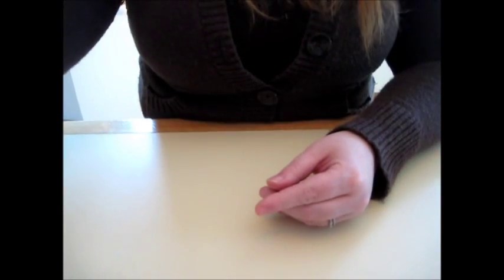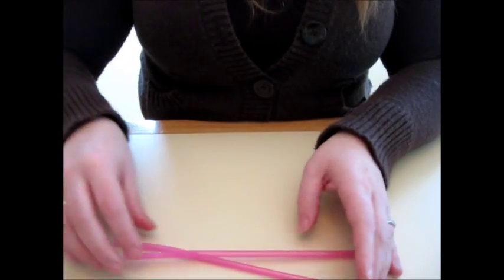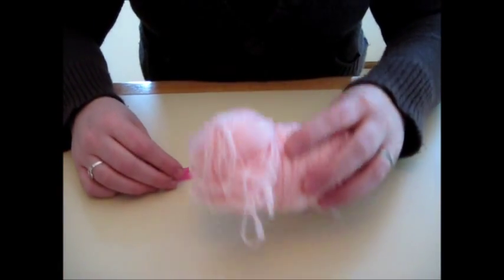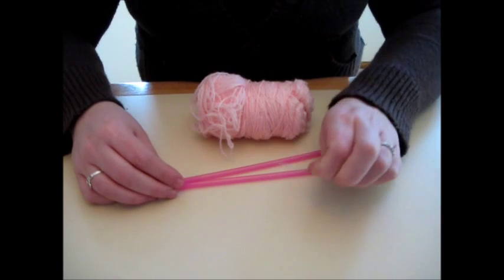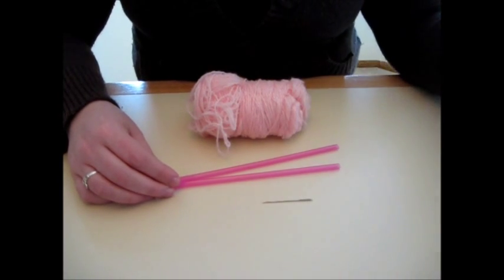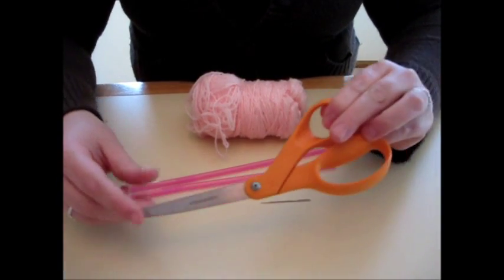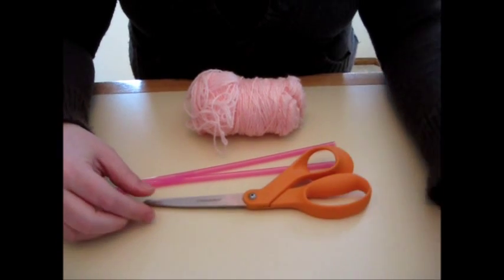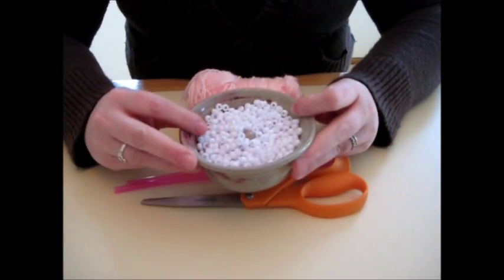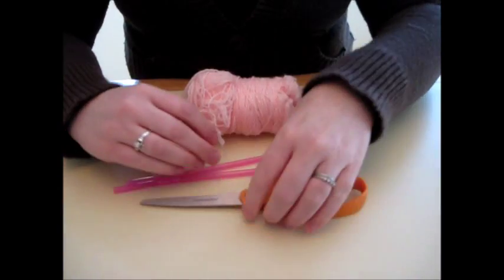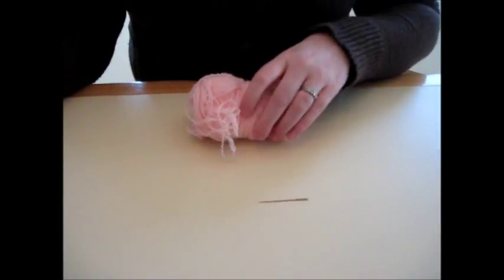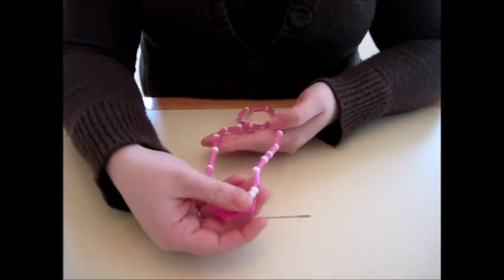You're going to need drinking straws, yarn, a sharp thick tapestry needle, scissors, and pony beads. When you're done, the finished product will be a necklace that looks something like this.